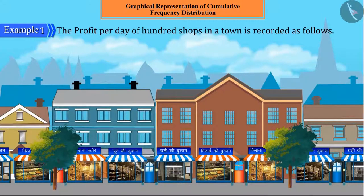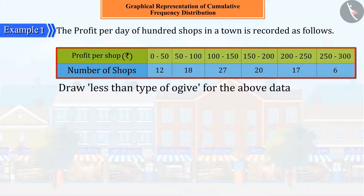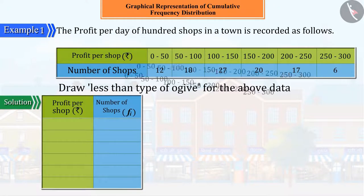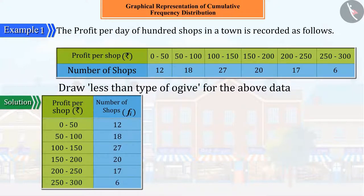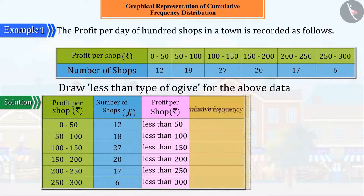The per day profit of 100 shops in a town is recorded as follows. Can you draw a less-than type of ogive for the above data? We know that to get the ogive in the given distribution, we need to create the cumulative frequency distribution for the less-than type of ogive.